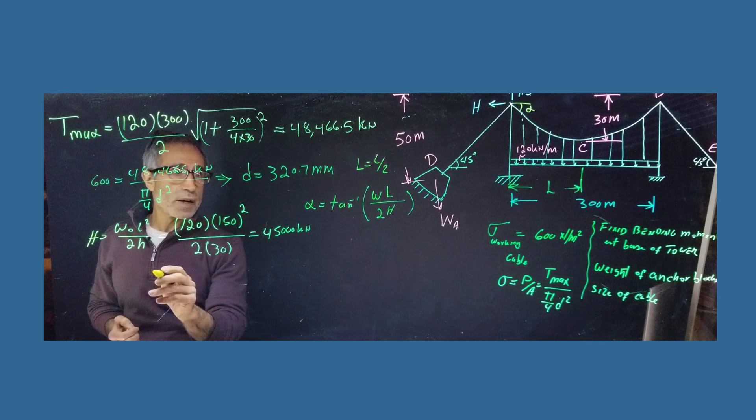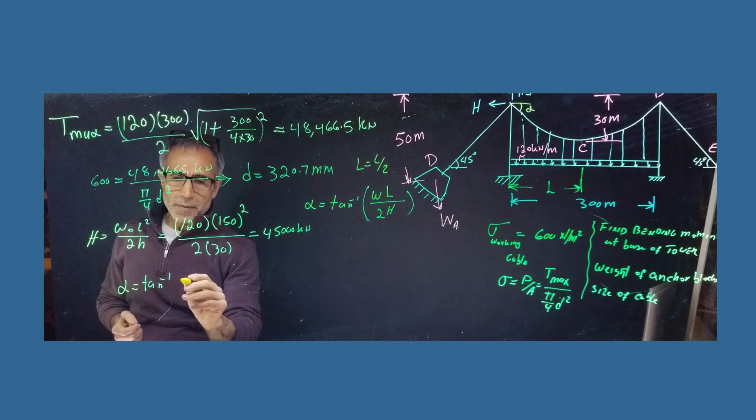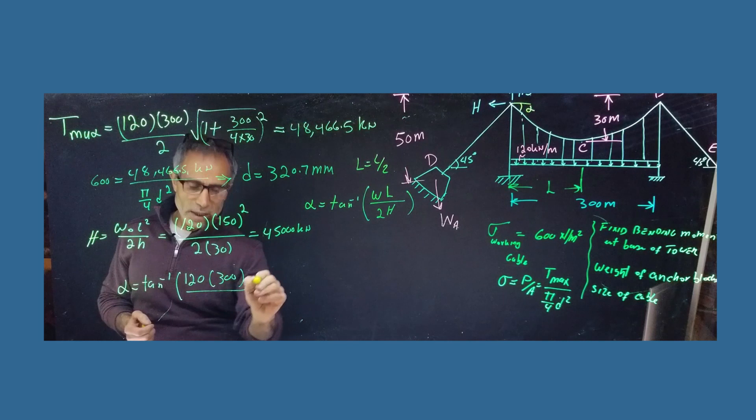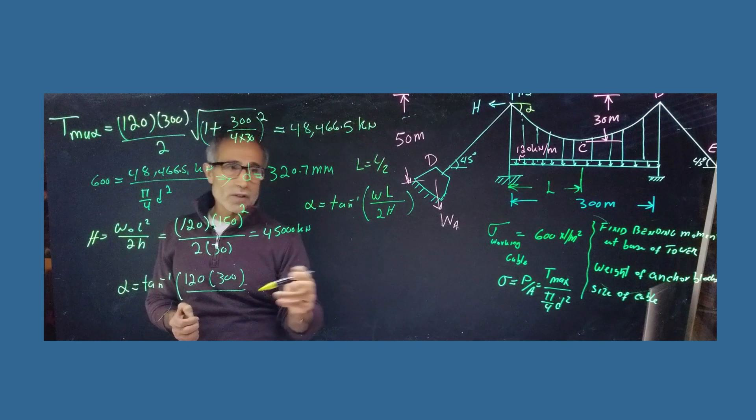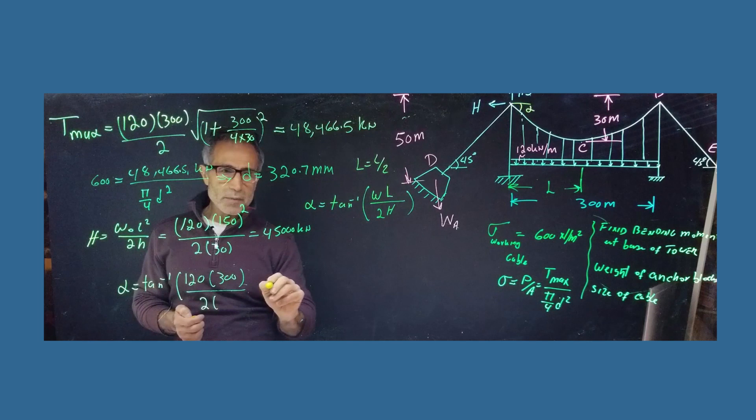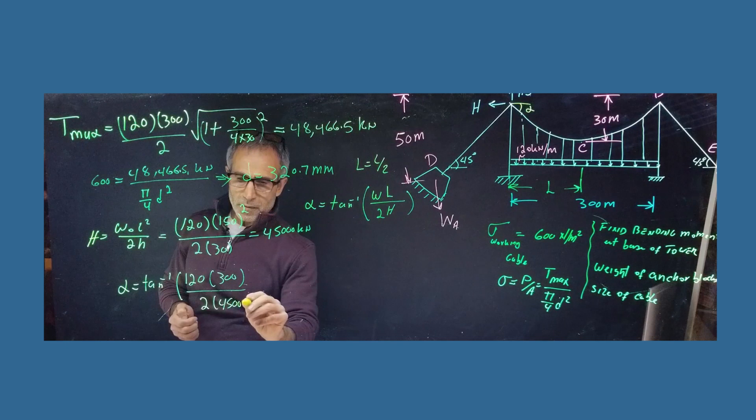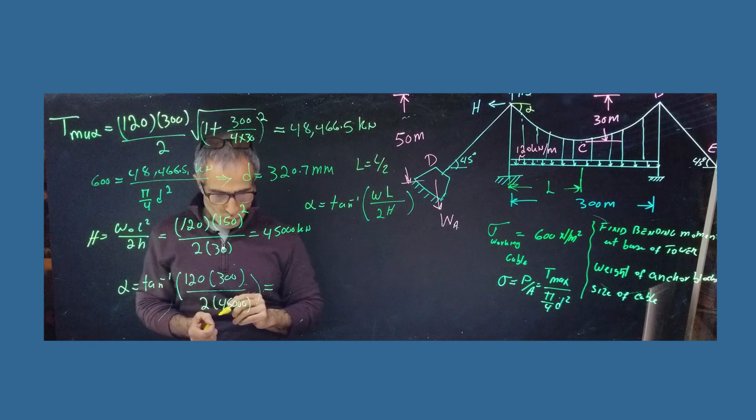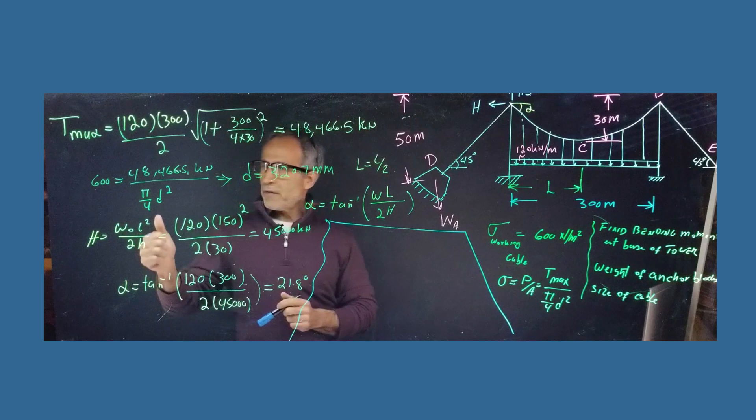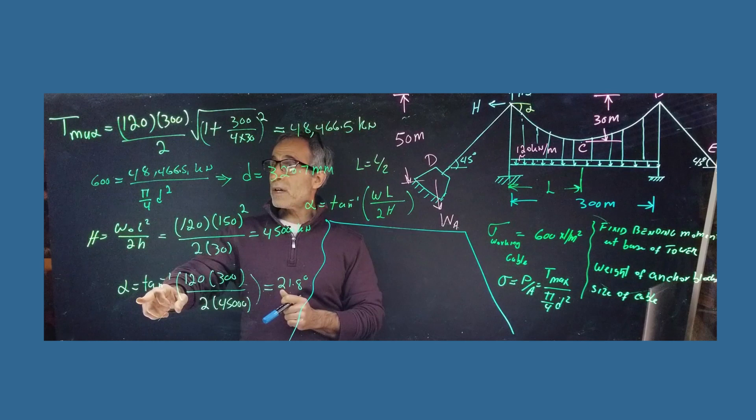So L is assuming to be the big long L. L is over L over 2 here. Or we can just say alpha is equal tangent of inverse of 120 times 300 divided by 2H. Or 150 divided by H. Doesn't matter. Same thing. So 2 times 30. 2 times 45,000. So that should come out to 21.8 degree. All right. We have find our horizontal force. And we have found our alpha.